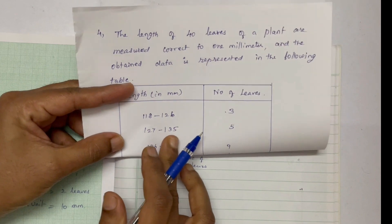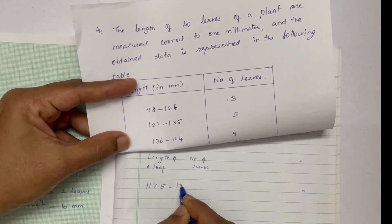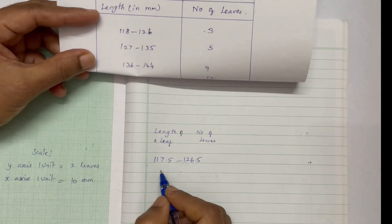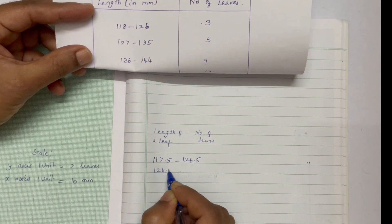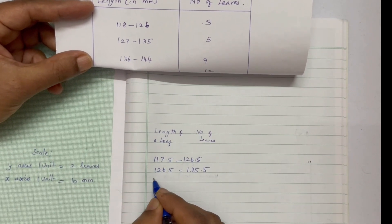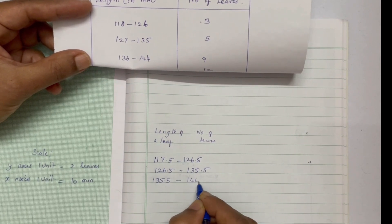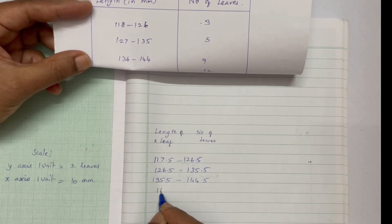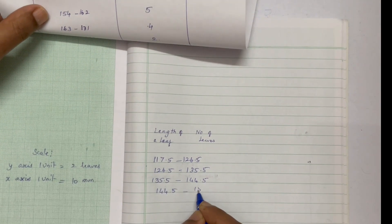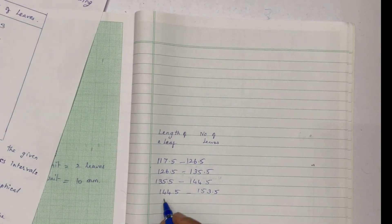The continuous class intervals are: 117.5 to 126.5, then 126.5 to 135.5 for the next interval, and then 135.5 to 144.5 for the following interval.